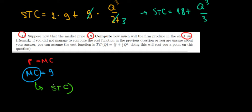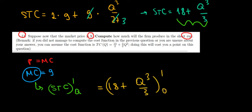So it's the short run total cost function derivative with respect to quantity, and we calculated it in the previous video. So we're going to use that. It will be 18 plus q³/3, derivative with respect to quantity.